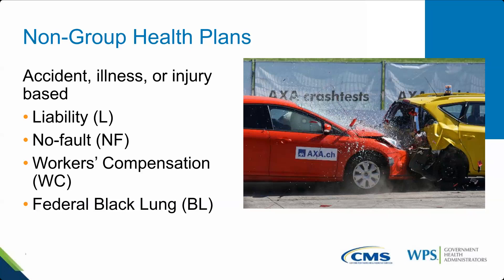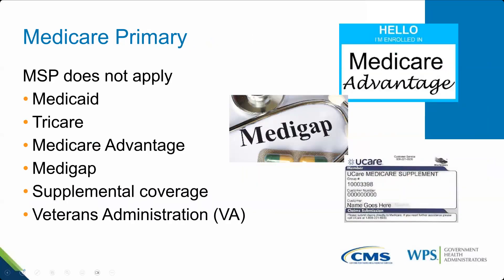When is Medicare always primary? First, Medicare is always primary to Medicaid, because Medicaid is the payer of last resort. The law also states Medicare is primary to TRICARE, though TRICARE can pay the deductible or patient liability amount. Medicare Advantage is not primary or secondary to traditional fee-for-service Part A and B Medicare — Medicare Advantage is Part C, a replacement plan. If a patient has a Medicare Advantage plan, traditional Medicare will not consider, pay, or do anything — that is tip number one.